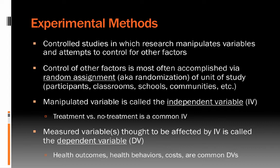In experimental methods, the manipulated variable — the one that changes participants' experience, such as a treatment or the absence of a treatment — is called the independent variable, or IV. Measured variables thought to be affected by the IV are called dependent variables, or DVs. In health psychology, common DVs include health outcomes like presence or absence of heart disease or diabetes, health behaviors like fruit and vegetable consumption or physical activity, and even healthcare costs.